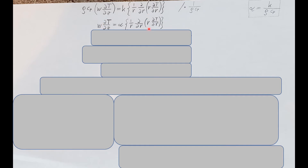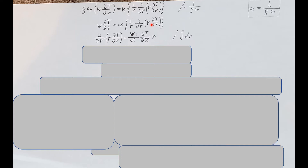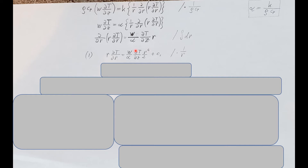Here is our simplified equation. To find the temperature profile we need T by itself, without all these derivatives hanging around, so we need to integrate both sides with respect to r twice. I rearranged things, taking the derivative of T to the left-hand side and collecting the constants on the right. After the first integral we have this equation with a little r still present. I multiply r to the right-hand side so we have easy access to the derivative of T.